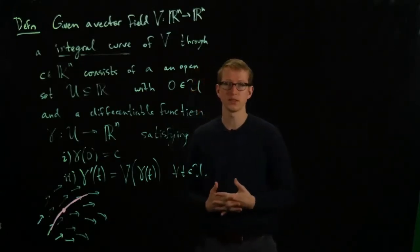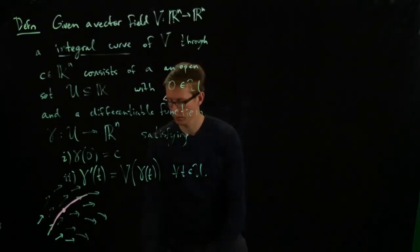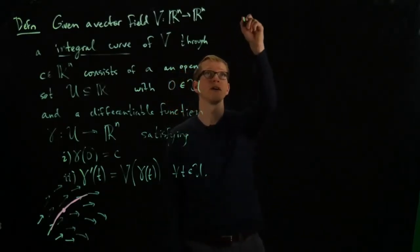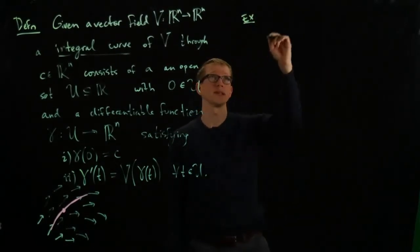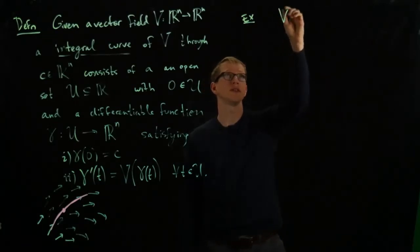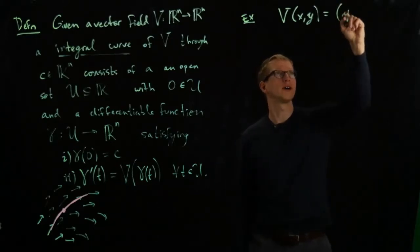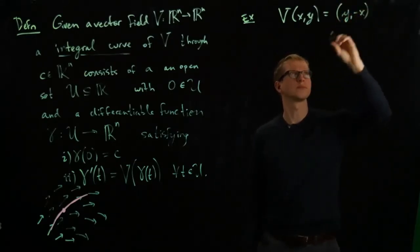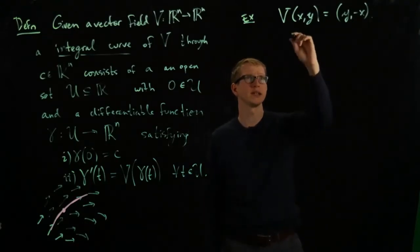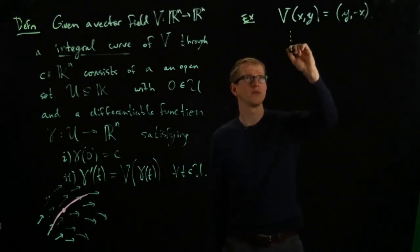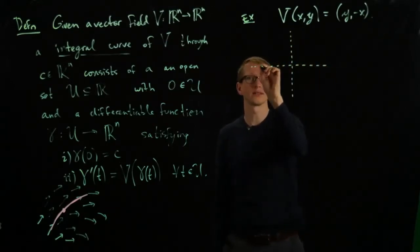But before we get to those examples, let's consider briefly the following one, which is a simple example in some sense. So let's say v at x, y is given by (y, -x) for all x and y in R^2. So what does this look like? If I try to plot this vector field, and I drew the x and y-axis like this.